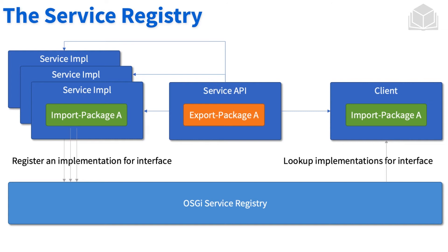In this example, we see that there are multiple implementations of the service API — maybe version one, two, and three — and each one of those components is registered within the service registry. It's up to us as programmers on the client side to pick which component we want. We can use a specific filter to filter out the components we don't want, or use a policy to select a specific component based on an attribute. We'll see this in code.